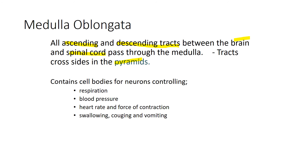The neurons in the medulla are important for respiration, where it works with the pons to monitor breathing. There is also monitoring of blood pressure via chemoreceptors. The medulla has cells involved in heart rate and force of contraction, as well as reflexes such as swallowing, coughing, and vomiting.